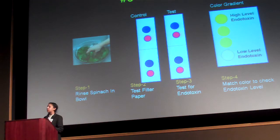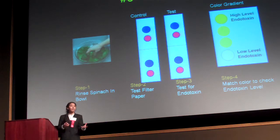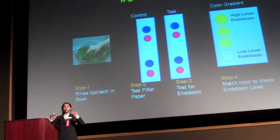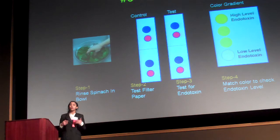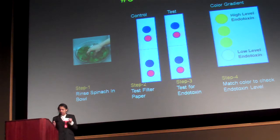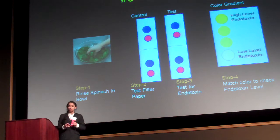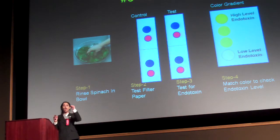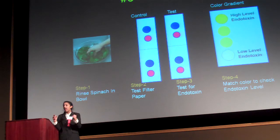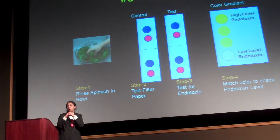I wanted to make sure my test was easy to use. I envisioned the consumer taking a few leaves of their salad, mixing it with some water, dipping their chemically treated paper into the water, and corresponding to a color change, knowing whether or not they can eat their salad — very similar to a litmus test. I designed the test with two spots: one spot for the LAL and one spot for the chromogenic substrate. The consumer would dip it into their salad water, creating a bridge between the two spots, so they would meet and produce a color change if endotoxin was present.